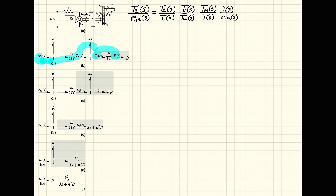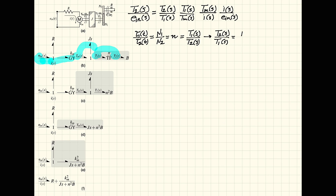We'll begin by coming up with some of these relations directly through the motor and through the gear pair. In the time domain, the gear ratio will relate the two torques: T1(t) over T2(t) will be equal to the gear ratio N1 over N2, or simply the transformer modulus lowercase n. This is also the relationship in the S domain of the Laplace transforms of the two torques. Hence, if we are looking to relate T2 to T1, then T2(S) over T1(S) is going to be 1 over the gear ratio.